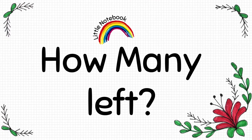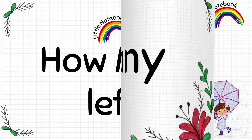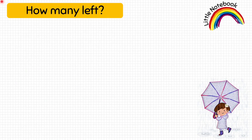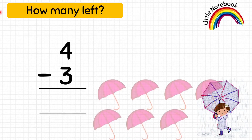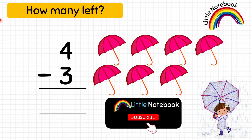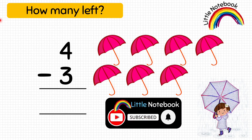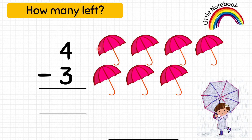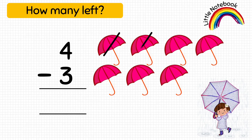Now our next worksheet is how many left. It's time to do vertical subtraction. For example: four minus three equals how much? Here four represents these four umbrellas and three represents these three umbrellas. To subtract, let's cross out three umbrellas — one, two, three. We are left with only one umbrella out of four, so the answer is one. Four minus three equals one.